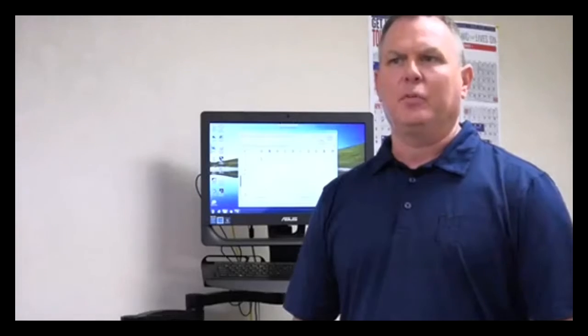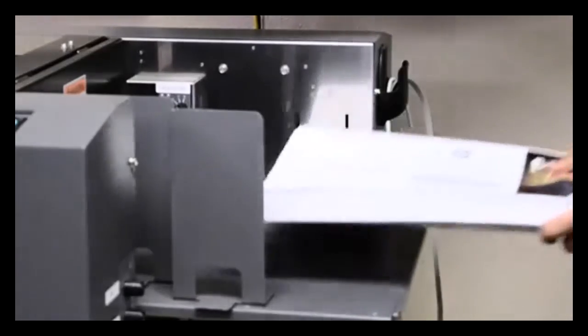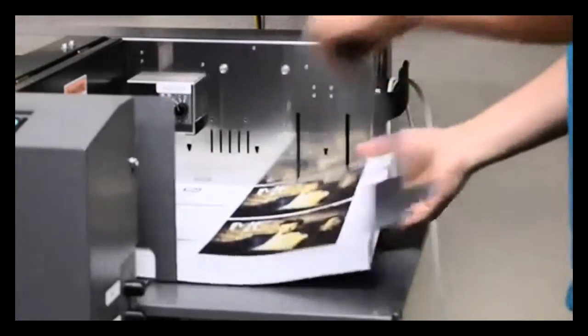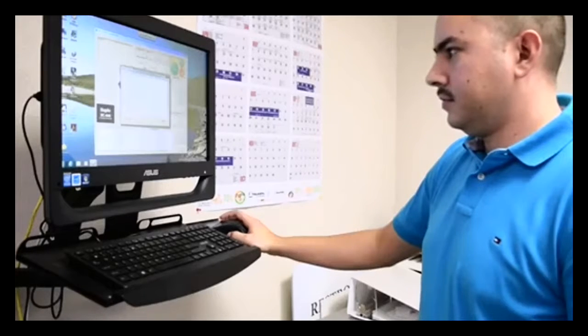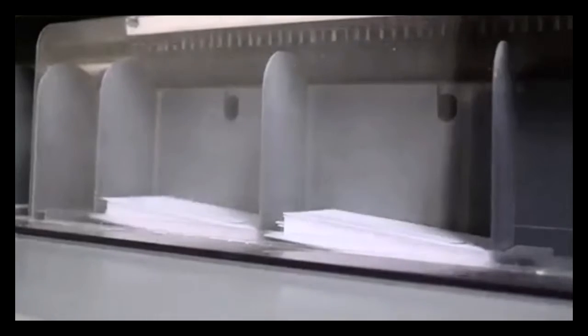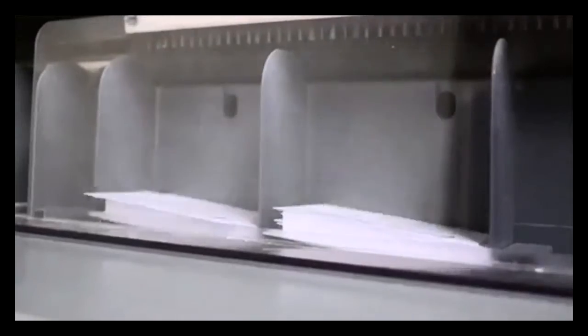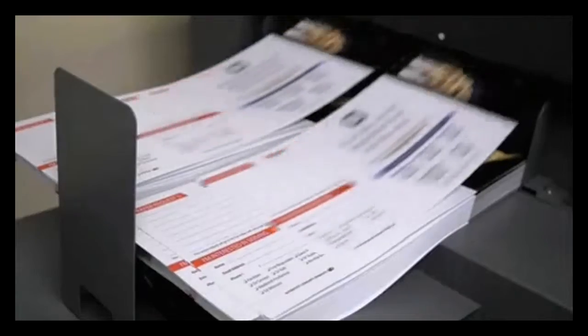I think one of the things that we really like about the Duplo 646 is the quick job changeover. We can go from a 13×19 press sheet doing a custom perf and score and change over to an 8½ by 11 eight up business card and then change right back over to a 13×19 sheet that has a custom perf job on it.